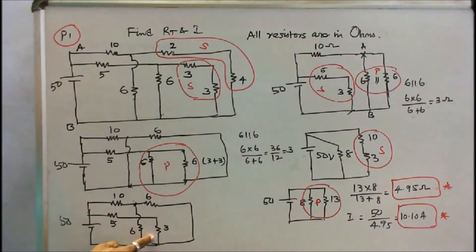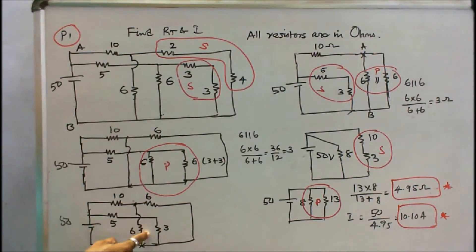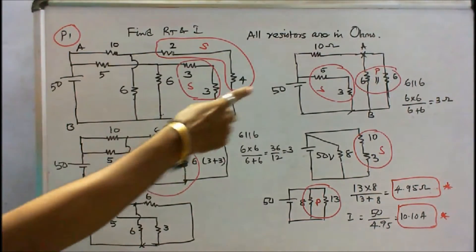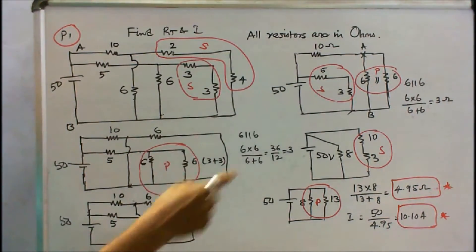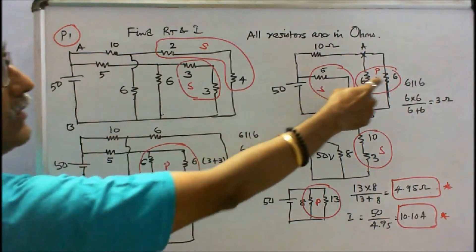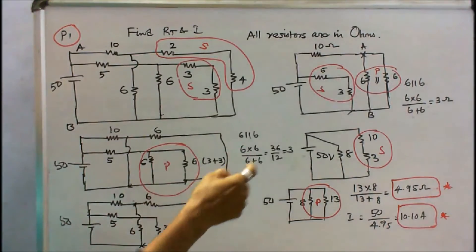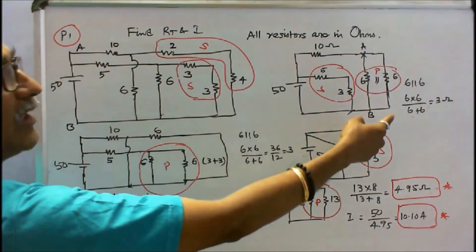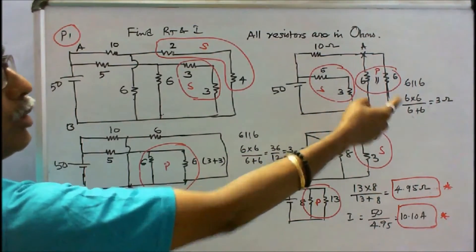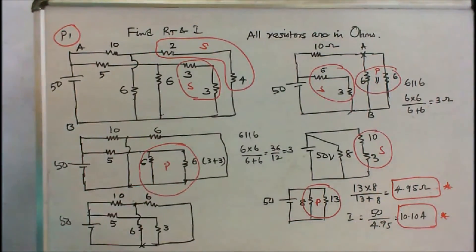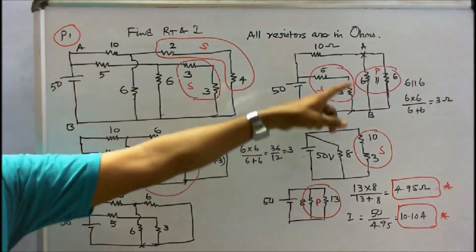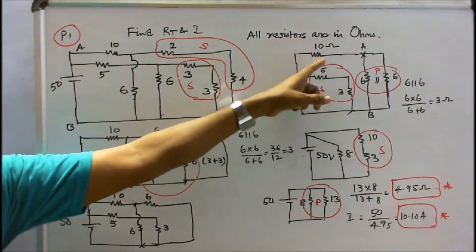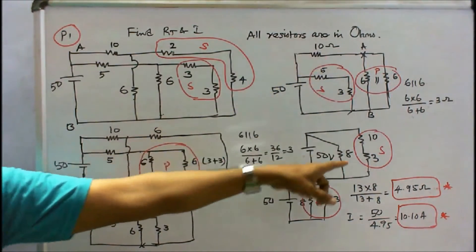This 6Ω and 6Ω are in parallel. Therefore 6×6 / (6+6) = 3Ω. That 3Ω resistor is in series with the 10Ω resistance, so this total resistance is 13Ω.